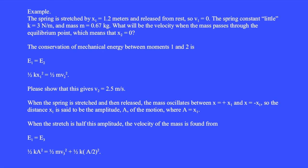For example, the spring is stretched by X1 equals 1.2 meters and released from rest, so V1 equals 0. The spring constant k equals 3 newtons per meter and mass m equals 0.67 kilograms. What will be the velocity when the mass passes through the equilibrium point, meaning X2 equals 0? The conservation of mechanical energy between moments 1 and 2 is E1 equals E2, where energy 1 is all elastic potential energy ½KX1² and energy 2 is all kinetic energy ½MV2². Please show that this gives V2 equals 2.5 meters per second.